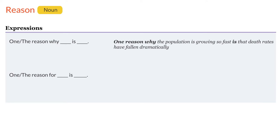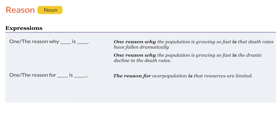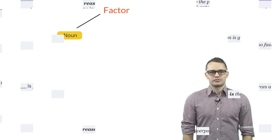One reason why the population is growing so fast is that the death rates have fallen dramatically. One reason why the population is growing so fast is the drastic decline in the death rates. The reason for overpopulation is that resources are limited. Note that similar to cause, the adjectives primary and main are often used with the word reason. Using this you can change the last sentence like this. The primary or main reason for overpopulation is that resources are limited.